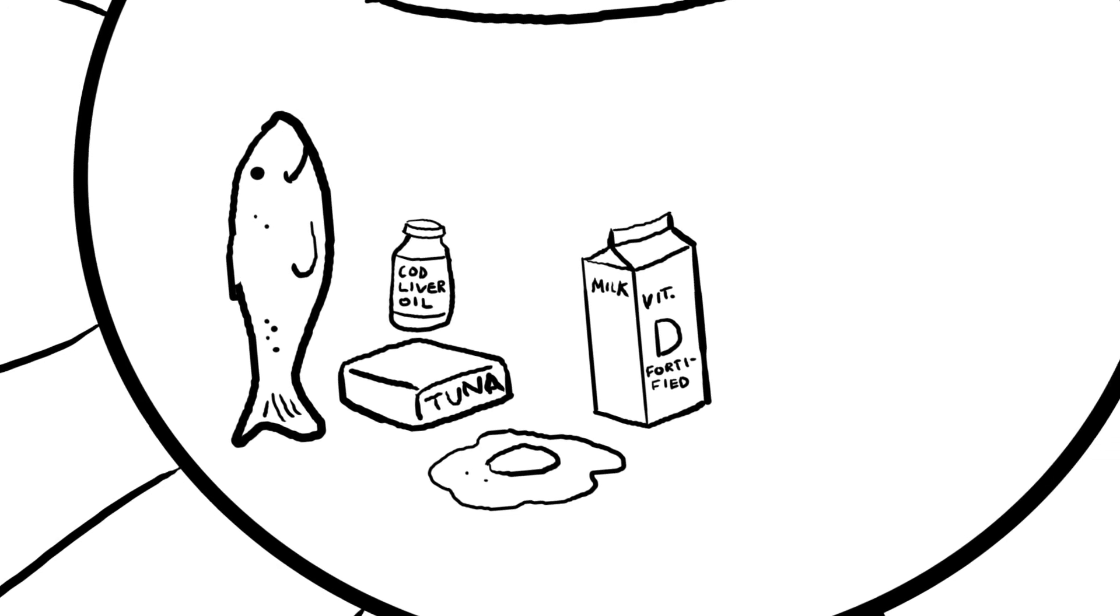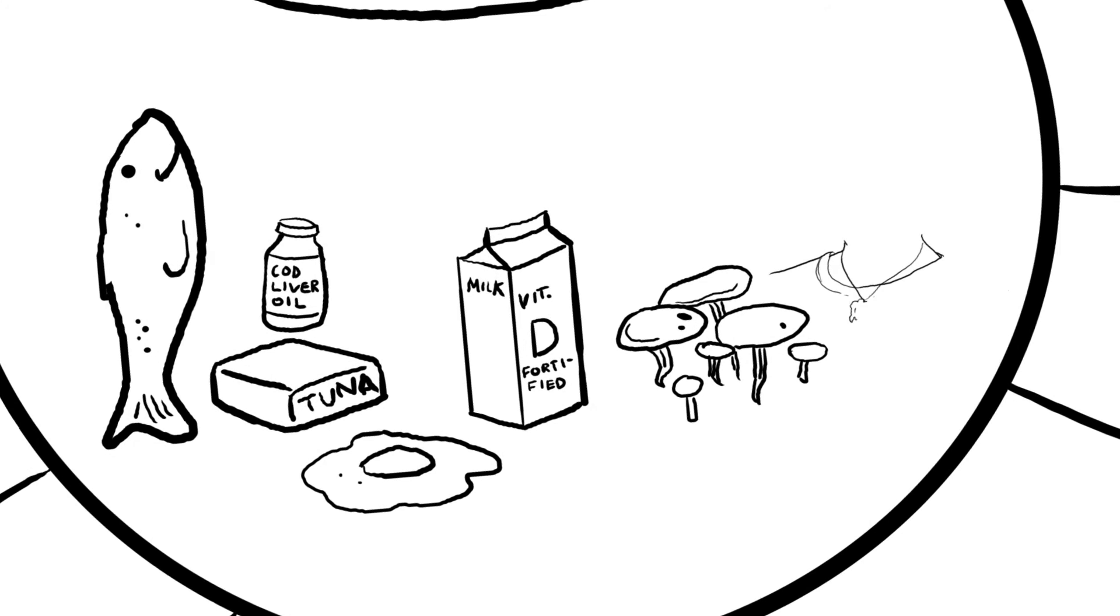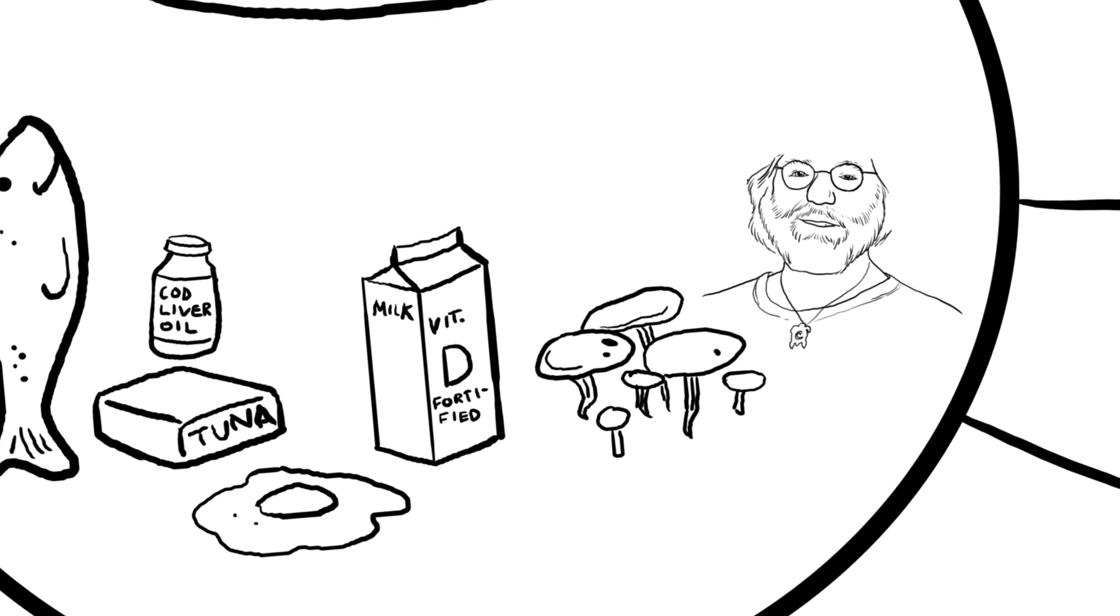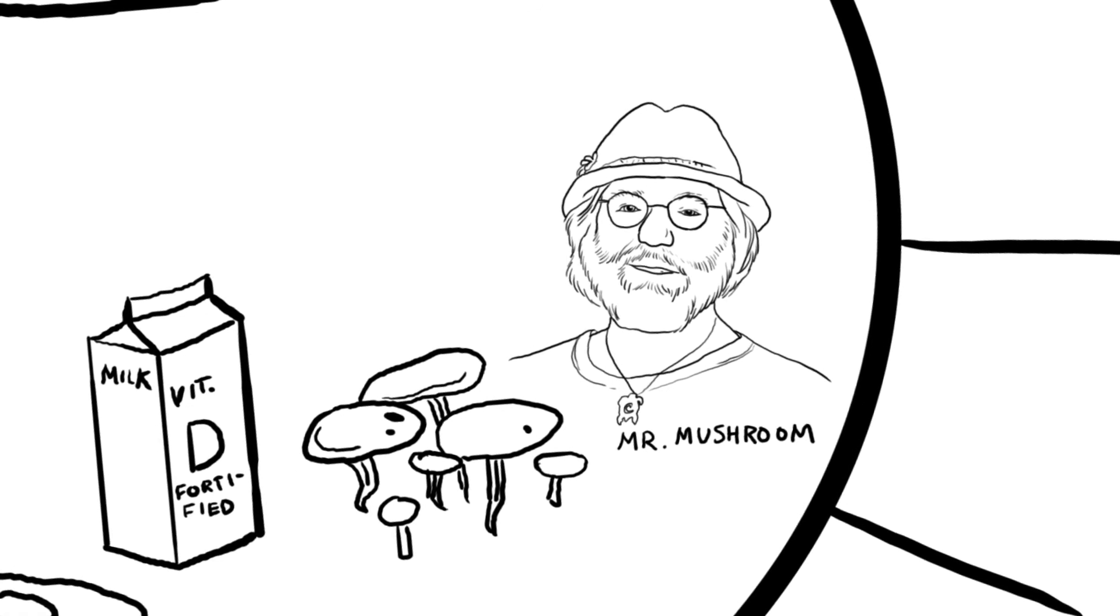If you're vegan, mushrooms are a great source and also some of the only plant sources that have vitamin D. In fact, Paul Stamets, a mycologist or otherwise known as Mr. Mushroom, discovered that freshly picked homegrown shiitake mushrooms had nearly 4,600 more individual units per 100 grams than store-bought shiitake mushrooms. See his book below to learn how to grow your own.